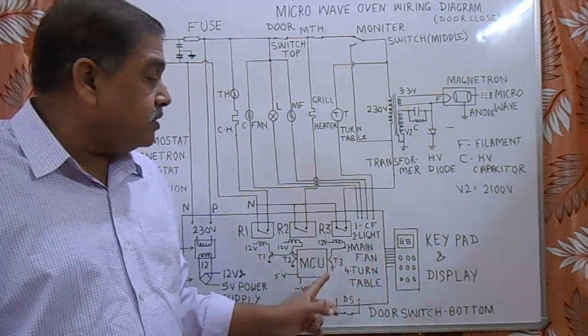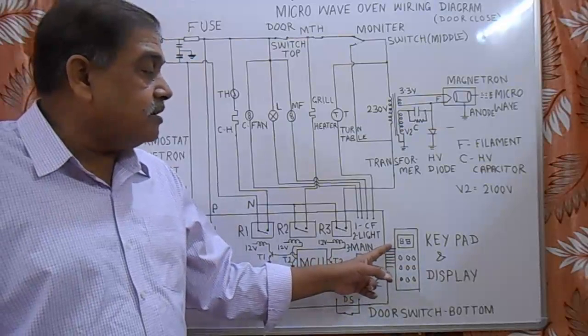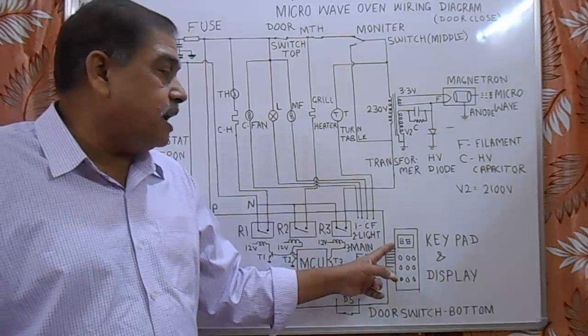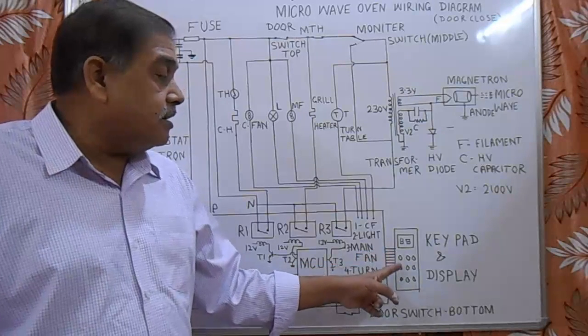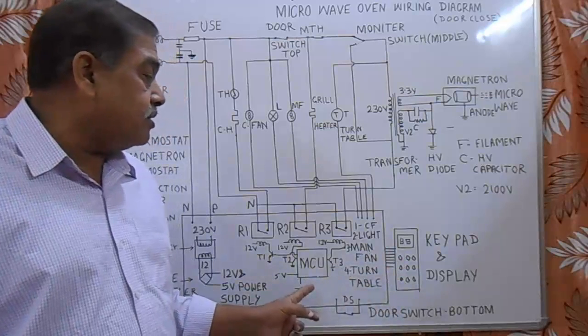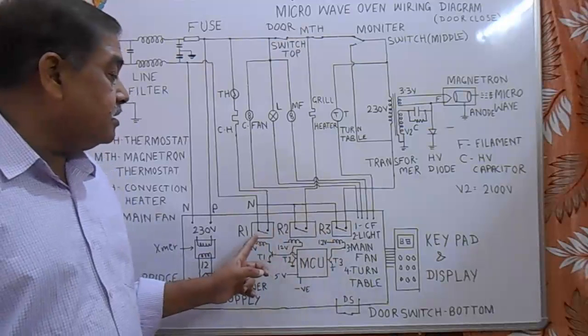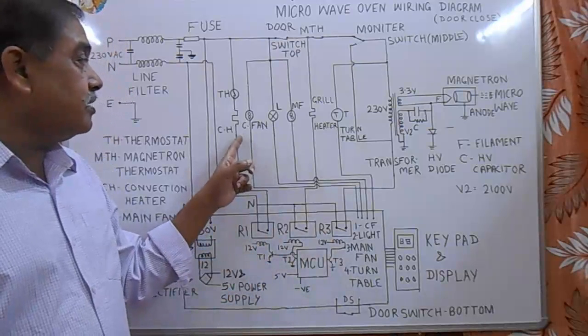It is micro control unit. It is connected to keypad and display system. It gives display of other variables, for example time, temperature, etc. Keypad is given for giving input data to the microcontroller. There are three relays: R1, R2, and R3. R1 controls the convection heater, R2 controls the grill heater, and R3 controls the microwave unit.